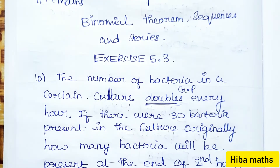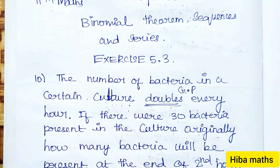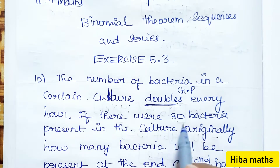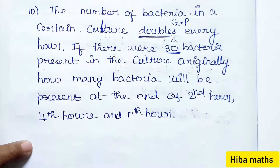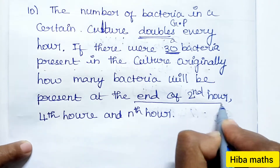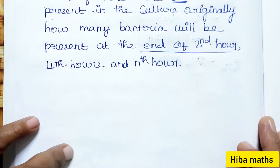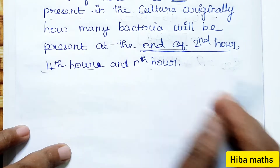Since the bacteria doubles every hour, it follows a geometric progression (GP). There were 30 bacteria present in the culture at the start. We need to find how many bacteria will be present at the end of the 2nd, 3rd, 4th hour, and the nth hour.